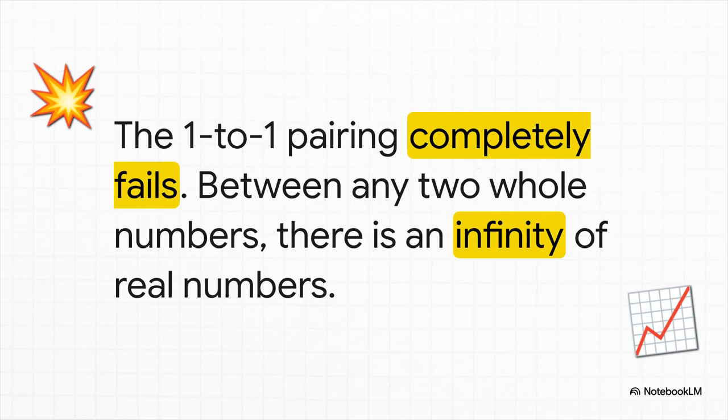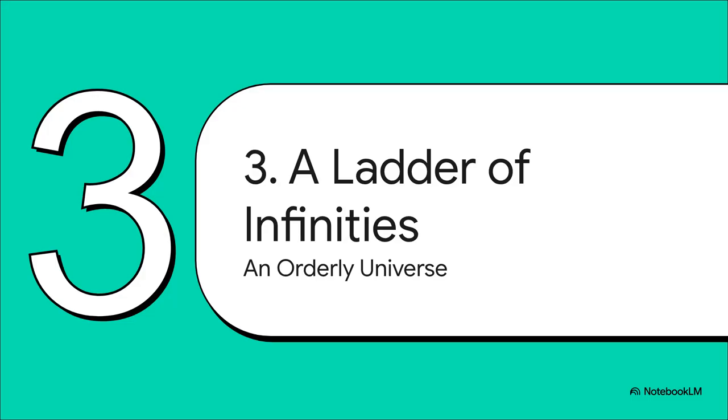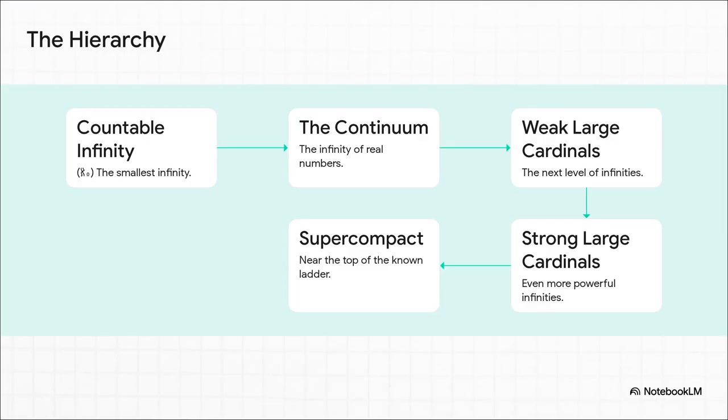This discovery just blew the doors wide open. For the next century and a half, mathematicians kept finding more and more sizes of infinity, each one bigger and more powerful than the last. It was like they were building a ladder to the sky. And they started to assemble this ladder of infinities. Way down at the bottom, you've got our friendly, countable infinity. A step above that, the uncountable infinity of real numbers. And then,